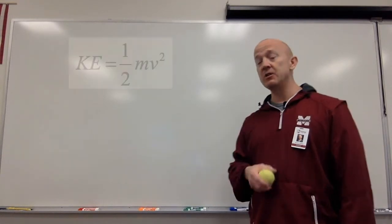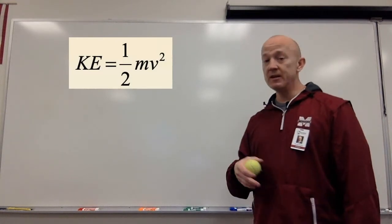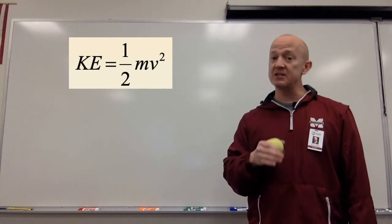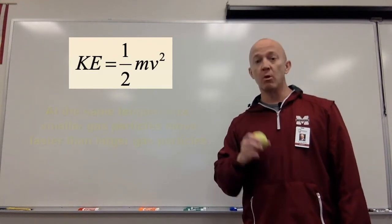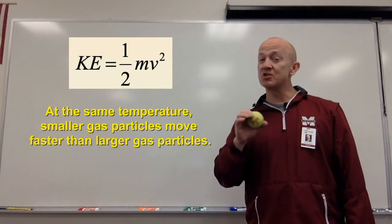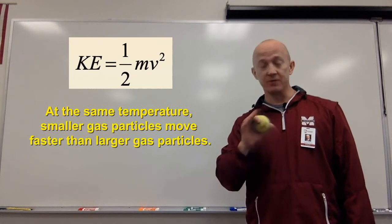To calculate kinetic energy, we use this equation. Kinetic energy, or KE, equals one-half times the mass times the velocity of that particle squared. What we can derive from this is, that at the same temperature, small molecules, or small particles, move faster than larger ones do.